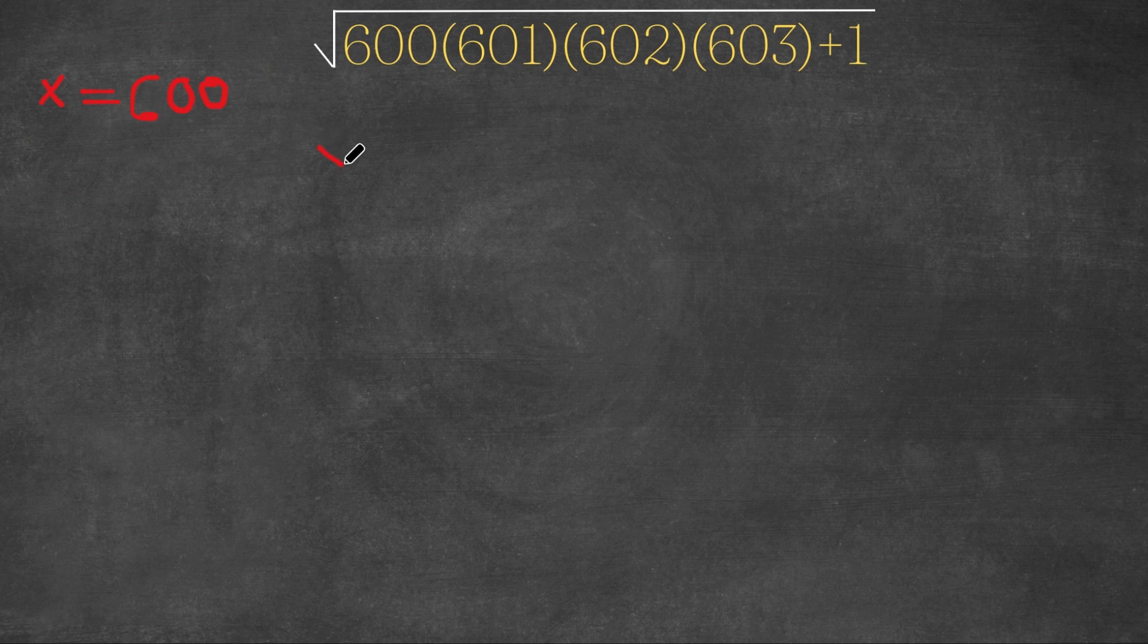So now we have the simplified form of this: x times x plus 1 times x plus 2 times x plus 3. And we have our plus 1 at the end.